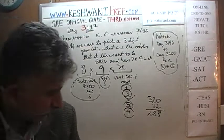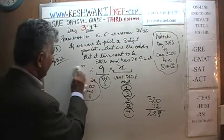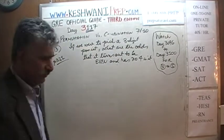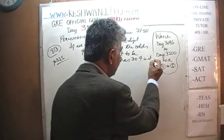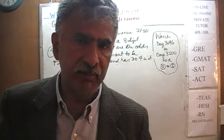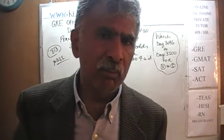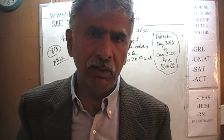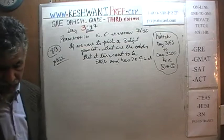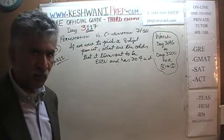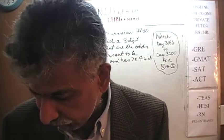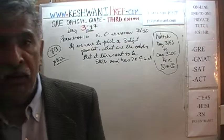Let me read one more time. Among all the positive three-digit integers, if we were to simply pick one at random, what are the odds that it happens to be even and has no four in it anywhere? I'll give you five seconds for you to pause and unpause the video, do the problem yourself, and then we'll compare your work against what we do together in a few seconds.